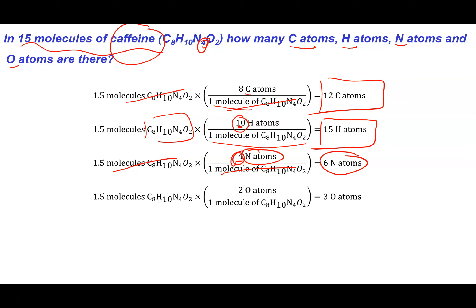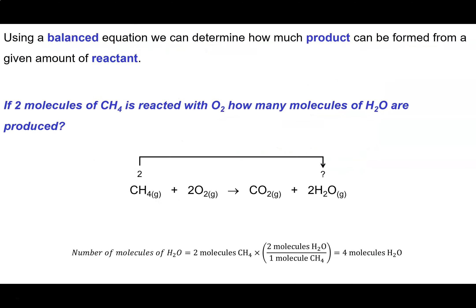Going back to balanced chemical equations — using a balanced equation, you can determine how much product can be formed from a given amount of reactant. What's going to help us with this is not the subscripts, but rather the coefficients that appear at the front. We're going to use these coefficients in a similar way that we use the subscripts in a chemical formula.